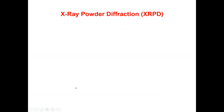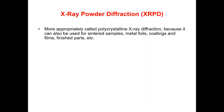We will start with X-ray powder diffraction, which in short we call XRPD. This technique is more appropriately called polycrystalline X-ray diffraction. The reason we call it polycrystalline X-ray diffraction is because it can also be used for sintered samples, metal coils, coatings, films, finished parts, etc.